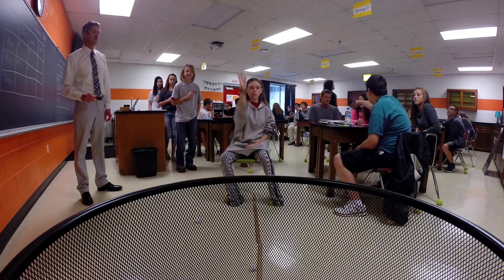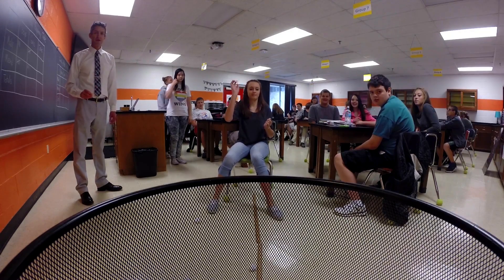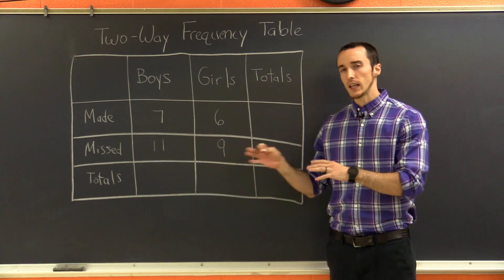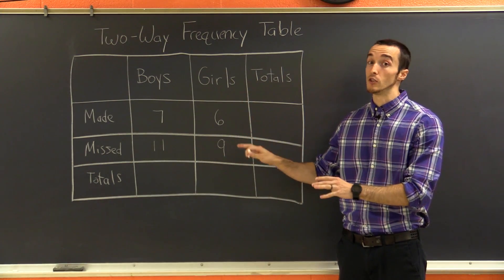but we were also paying attention to gender. So how many boys made a basket and how many girls made a basket. So this is some sample data that we got from that experiment, and let's take a look and make sure we understand how to read a two-way frequency table.